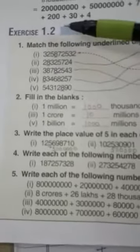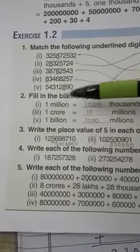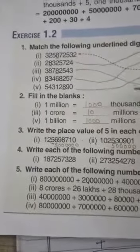Next is Exercise 1.2. The second part is filling in the blanks. One million is equal to dash thousands.